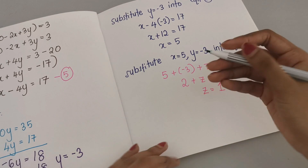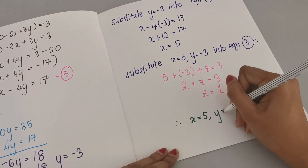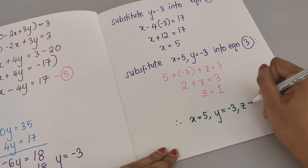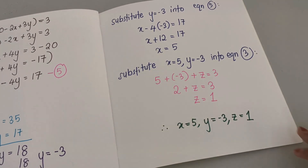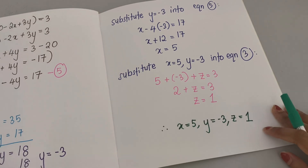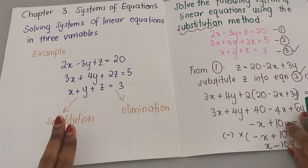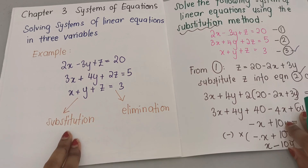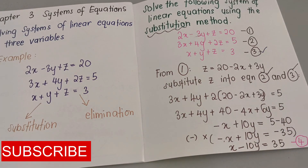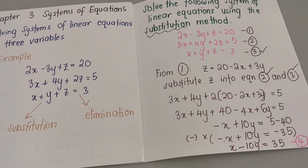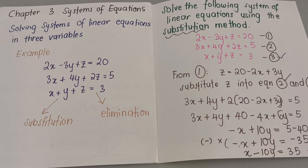We've obtained all the values. The final answer is x equals 5, y equals negative 3, and z equals 1. In the next video, I'll guide you on how to solve using the elimination method. Don't forget to like, subscribe, and share this with a friend who needs help with substitution.